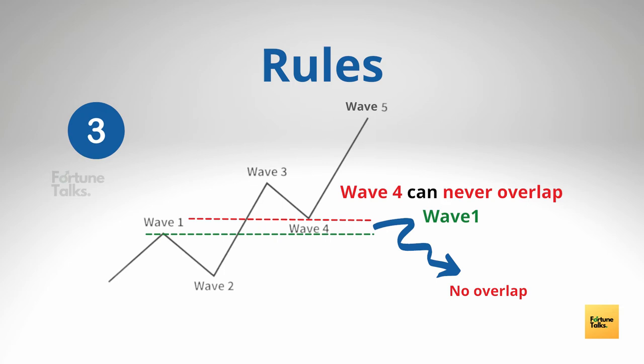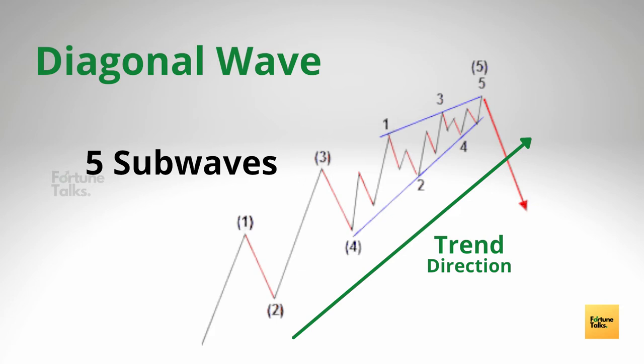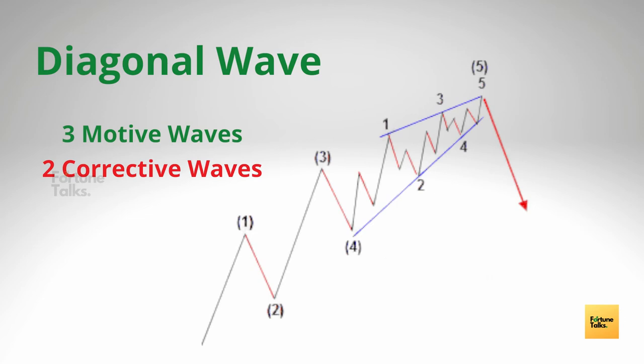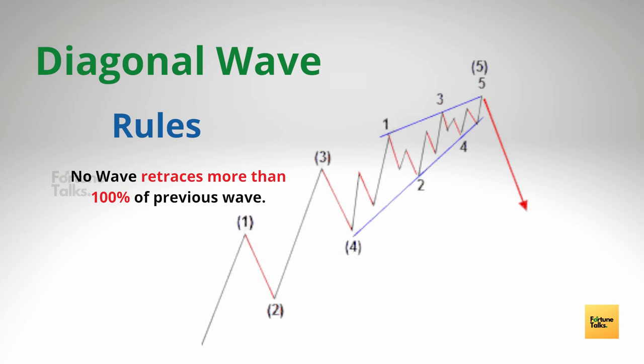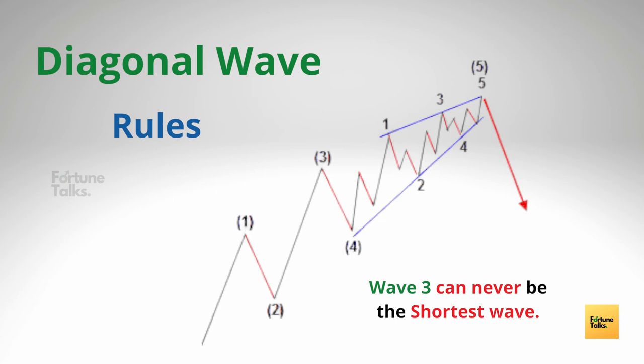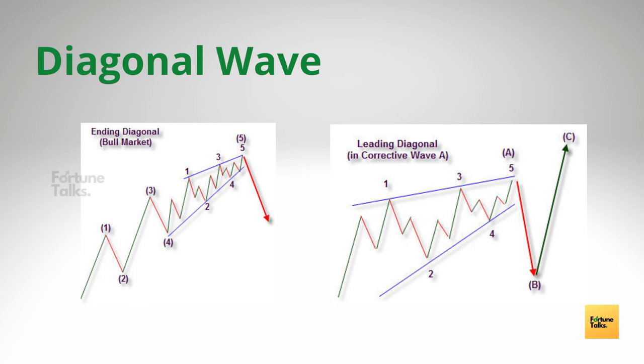Now let's take a look at the second type of motive wave, the diagonal wave. Like all motive waves, diagonal waves consist of five sub-waves and move in the direction of the trend. The diagonal wave looks like a wedge that may be either expanding or contracting. All three rules of the impulse wave also apply to diagonal waves. Diagonal waves can be further divided into ending and leading diagonals.